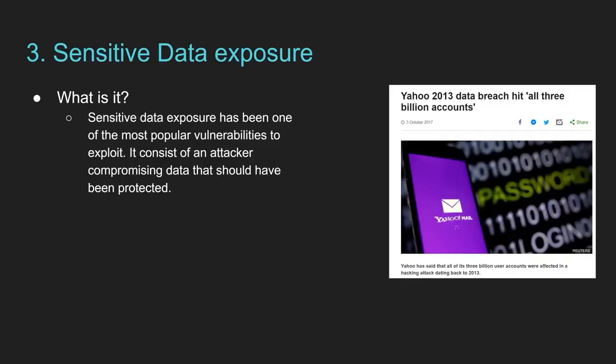Then we have sensitive data exposure. A good example is when Yahoo got hit by this — they confirmed that 3 billion user accounts were affected, meaning that information was leaked in hacking forums and made public. A good way to prevent this is to use a password hashing function to store passwords, so that if the database is leaked it is at least not in plain text. You should also be careful of what protocols you are using, ensuring that what comes in and out of your system uses the right security protocol and is not communicating in plain text.